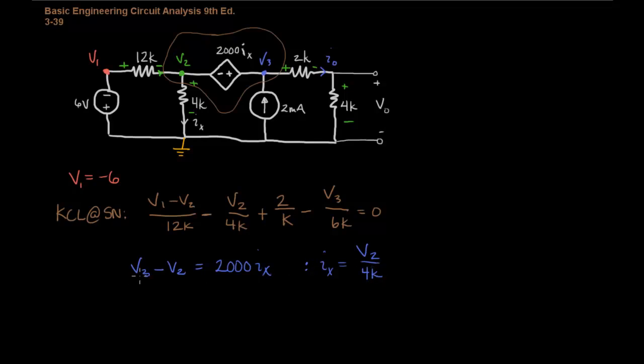So now let's write this equation in new terms. And we'll end up with V3 equaling 3 halves of V2 when you combine that.